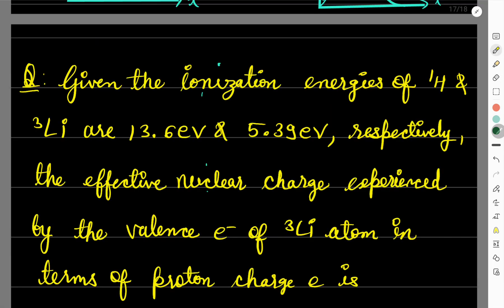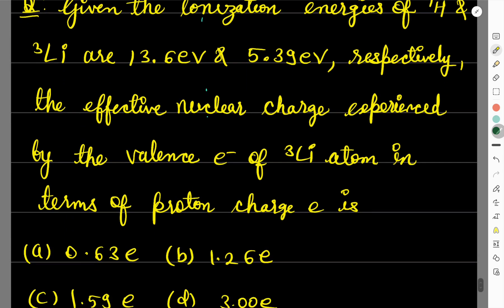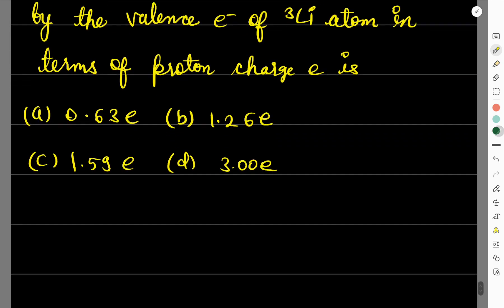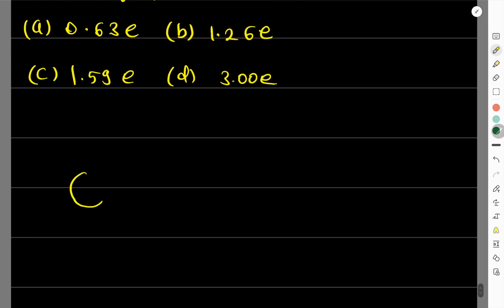The next question we are having: Given the ionization energies of hydrogen-1 and lithium-3 are 13.6 electron volt and 5.39 electron volt. This is the energy to ionize their valence electrons. That will be positive, and their ground state energy will be negative. Ionization energy is that energy which frees the electron from the attraction of nuclear potential. The effective nuclear charge experienced by the valence electron of lithium-3 atom in terms of proton charge e is - so for the valence electron of lithium we have to see.